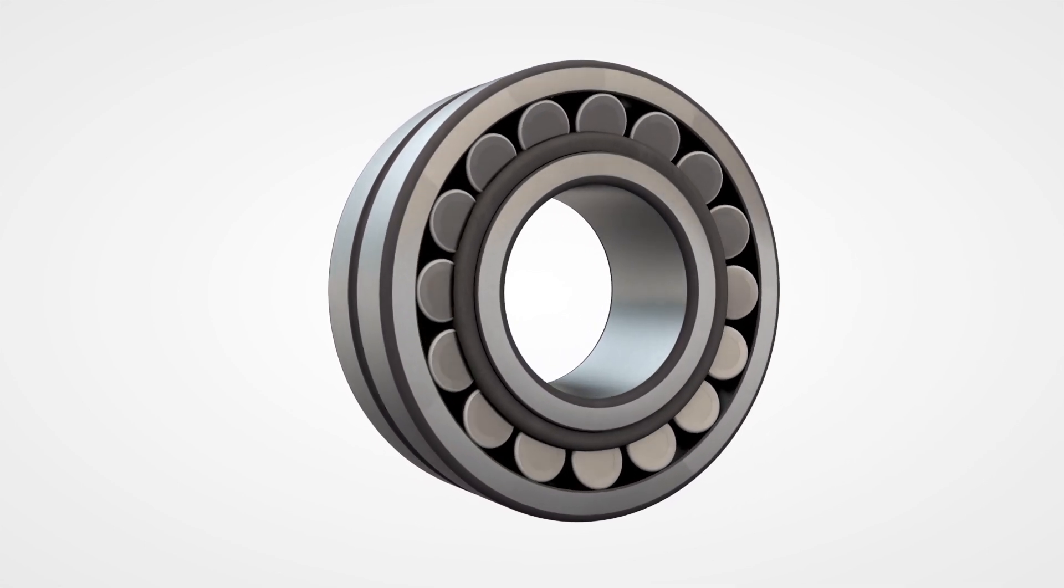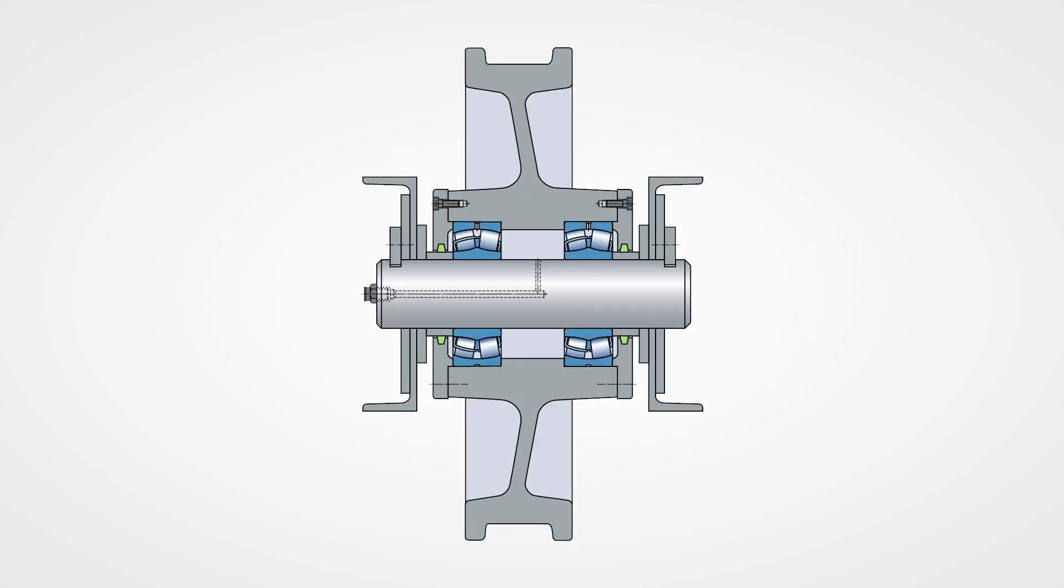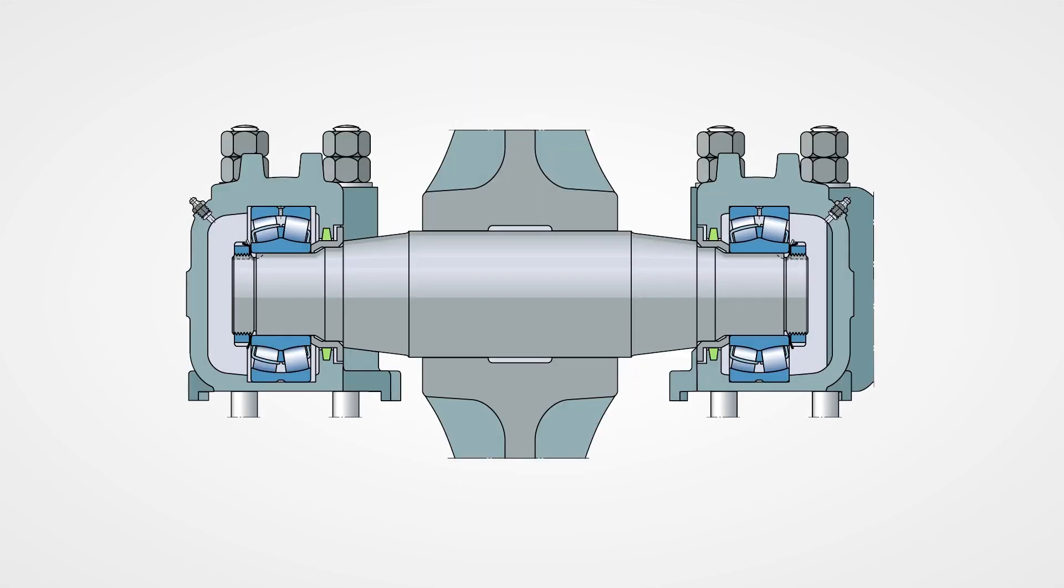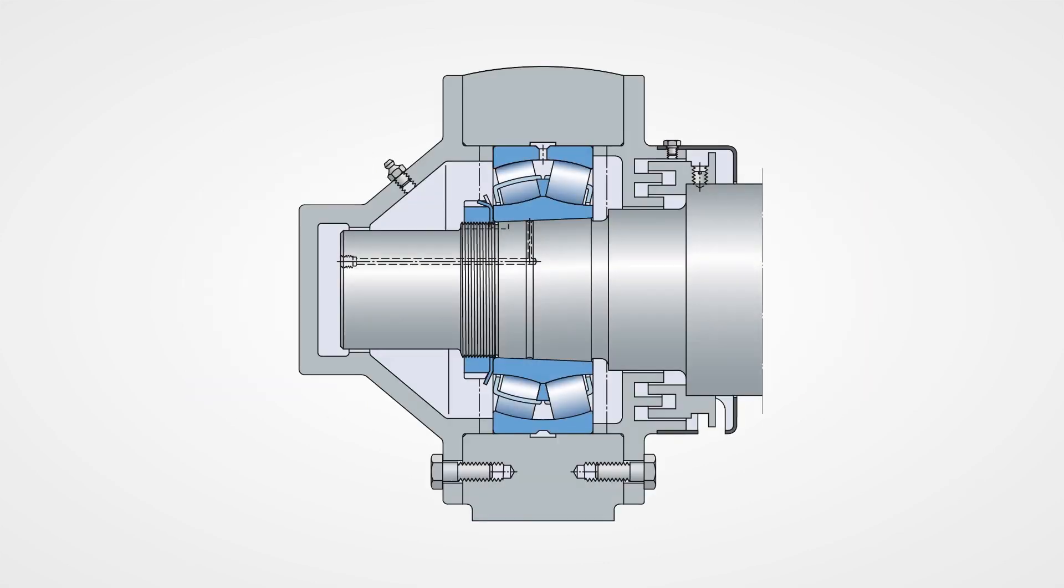This bearing is suitable for applications like conveyors, bridges and cranes, and other applications like paper mills and gearboxes, all of which carry high loads and can have some operational shaft deflection or misalignment.